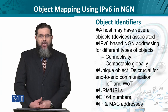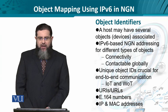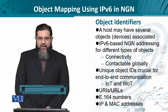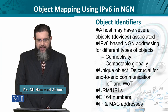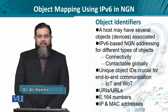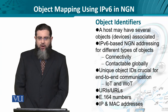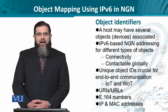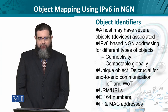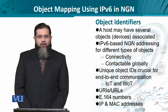A physical host like a computer could have multiple, or many many, objects or IDs associated with it, each one requiring some unique identifier. IPv6 and NGN addressing for different types of objects requires each object to have connectivity to the network as well as globally recognizable and contactable attributes. A unique object ID is crucial for end-to-end communication.